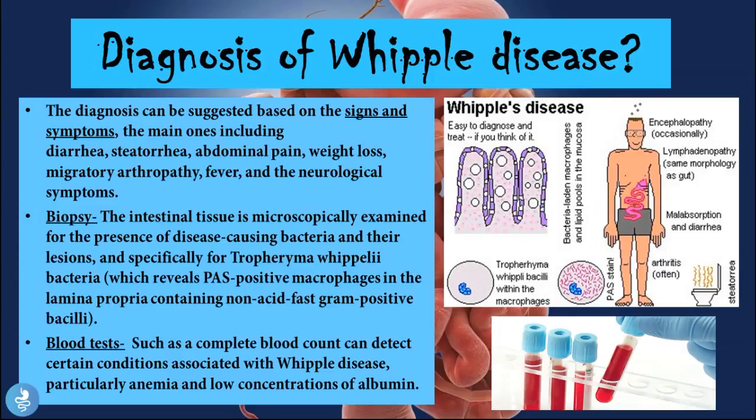Now let's talk about the diagnosis of Whipple disease. The diagnosis can be suggested based on the signs and symptoms, the main ones including diarrhea, steatorrhea, abdominal pain, weight loss, migratory arthropathy, fever, and the neurological symptoms.